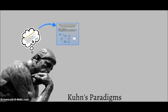In our last class, we discussed Karl Popper and his philosophy of falsification. We are now going to look at an alternative framework proposed by Thomas Kuhn.